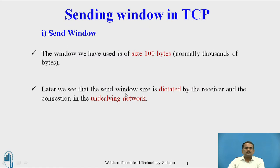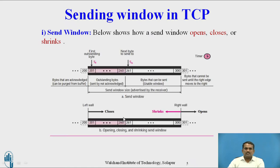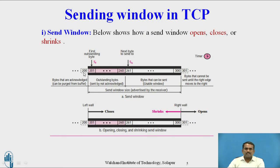The Send window size is dictated by the receiver and the congestion in the underlying network. The Send window diagram below shows a block diagram of the Send window, which contains different parts. The Send window can open, close, and shrink. It shows the first outgoing byte, next byte to send, and timers. Different user data is present — the user can send this data.